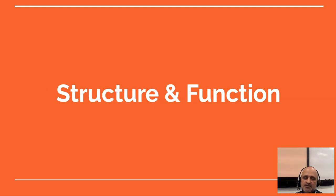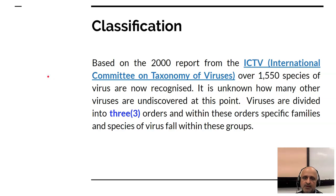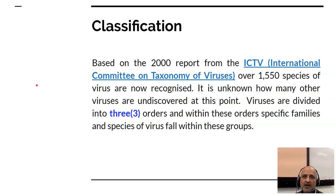Let us begin by looking at the structure and function of viral genomes. When we want to classify viruses, we look at the ICTV, which is the International Committee on Taxonomy of Viruses, which is the lead agency for the classification of viruses. We have around 1,550 species which have been recognized, and as genome sequencing advances, new information about viruses is becoming available at GeneBank and other publications. Currently, viruses are divided into three orders, and within these orders, specific families and species of viruses fall within these groups.